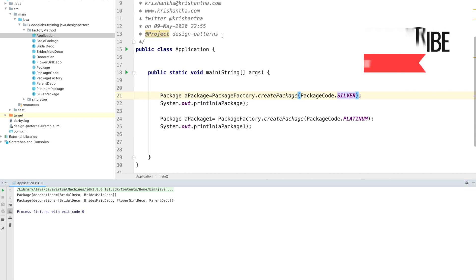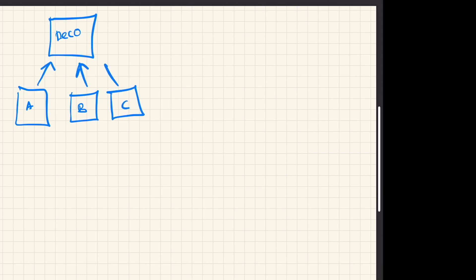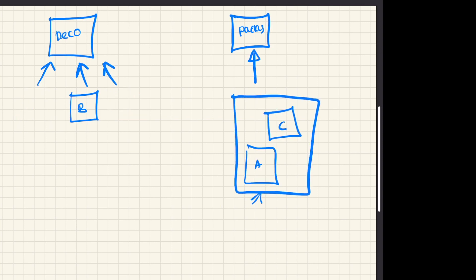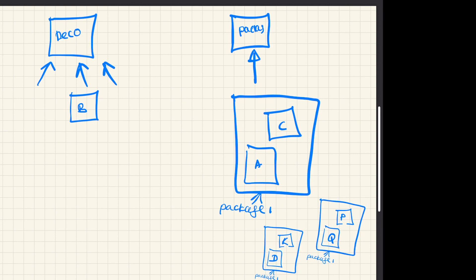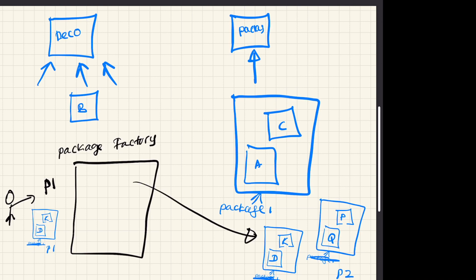To walk through how this works: you create the base elements, then you create a factory. Depending on the parameter coming in, it switches the instance it returns — that's the difference from singleton. In singleton, you don't get parameters; whatever asks for it, it just returns the same instance. In the factory method pattern, it has multiple instances and doesn't always return the same one. It returns different instances based on the input, always returning subclass or child class instances.